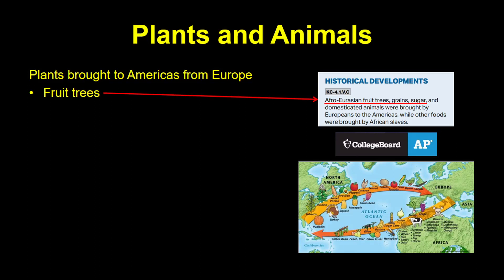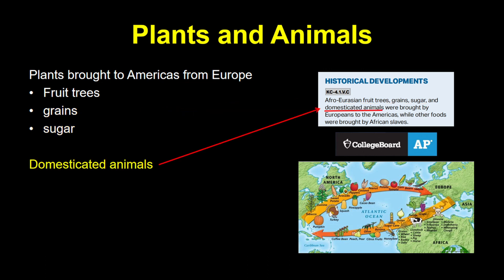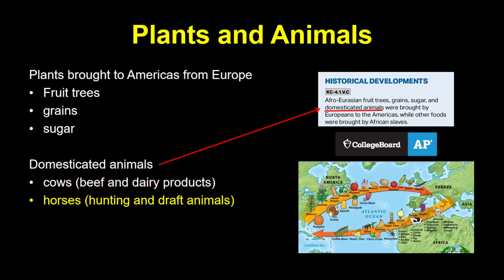Some historians have argued it's the single most important change in world history. And it didn't just change the diets of people in the old world — people in the new world got all kinds of new plants and animals: Afro-Eurasian fruit trees, grains, sugar, and domesticated animals. Animals like cows were used to produce beef and dairy products, but were also used as draft animals. Horses were used for hunting and warfare, transforming the practices of many indigenous American societies.